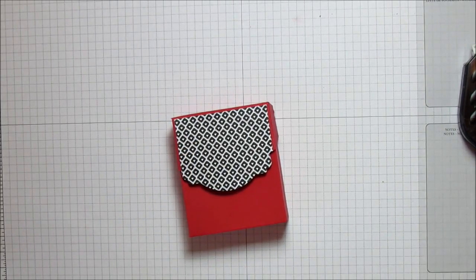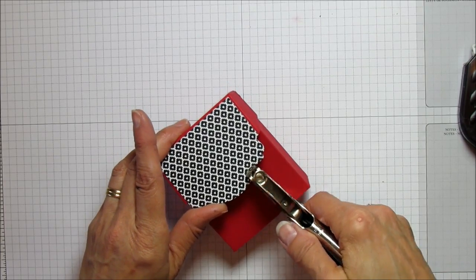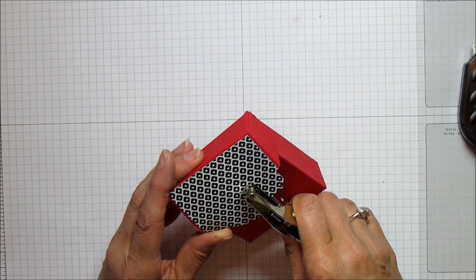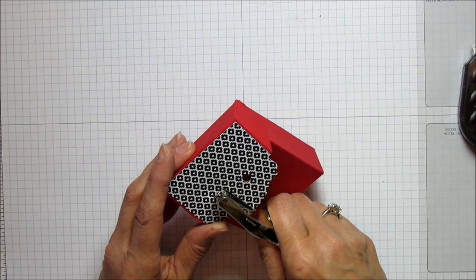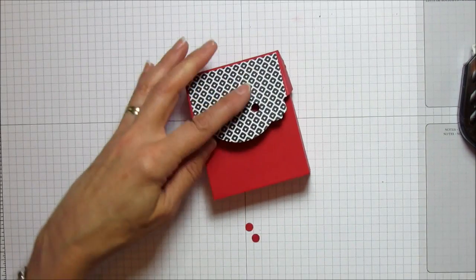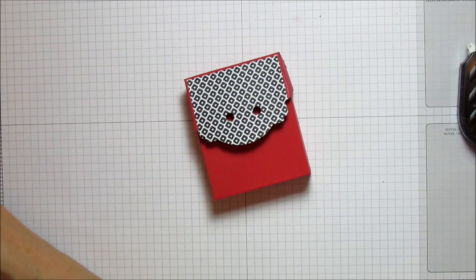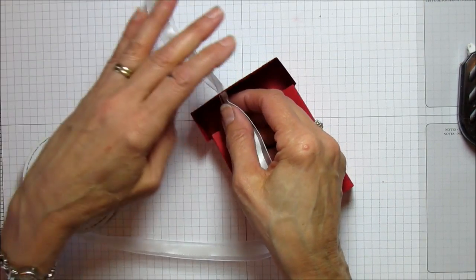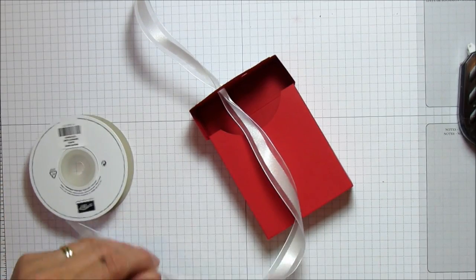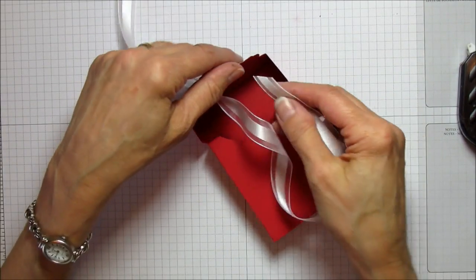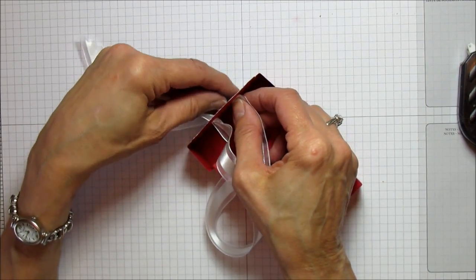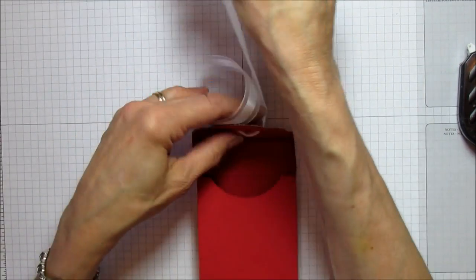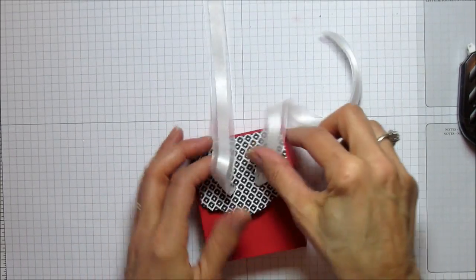The next thing I'm going to do is grab my hole punch and I just eyeballed this to put in a couple holes. I tried to make them even here, so we have two holes right there. Grab my ribbon - this is our organza ribbon that I'm using on this. I want to make sure I have enough ribbon here.